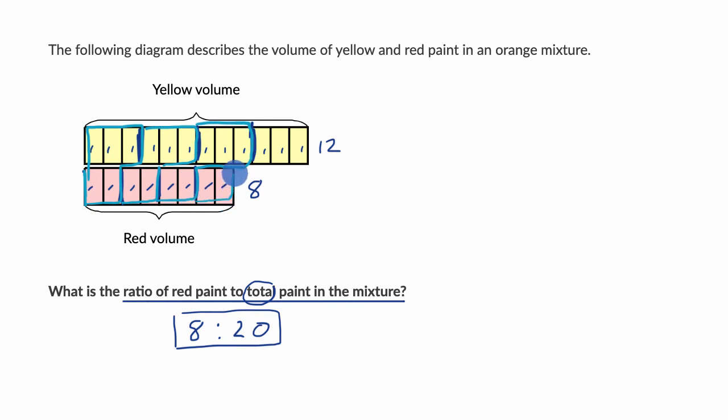And then last but not least, these two parts of red, and then those three parts of yellow. So for every two parts of red, you have three parts yellow.